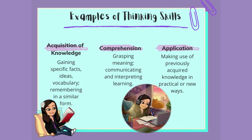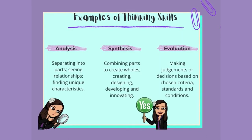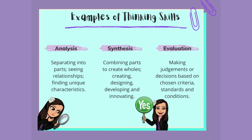Thinking skills. Examples of thinking skills include the acquisition of knowledge, by gaining facts, ideas, vocabulary, and remembering in a similar form. Comprehension is the grasping of meaning, communicating and interpreting this meaning through learning. Application: making use of previously acquired knowledge in practical or new ways. Analysis, in which students separate the information they have gathered into parts and are able to see the relationships between these parts.